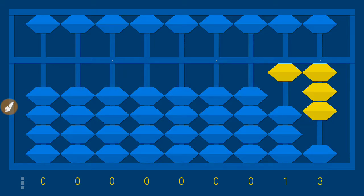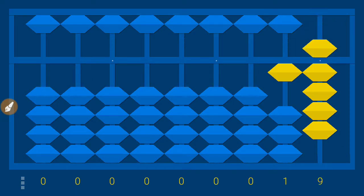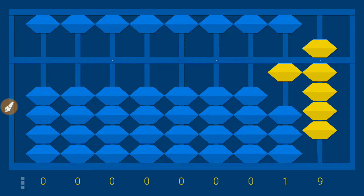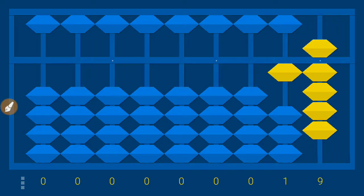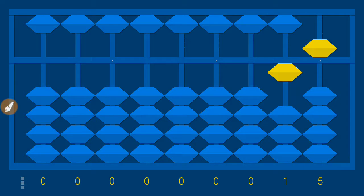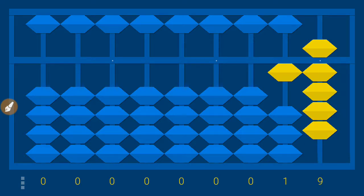Continuing — twelve, thirteen, fourteen. Now for fifteen: if you just push all lower beads up it becomes nineteen, not fifteen. So instead, clear the lower beads and push the upper bead up. That gives you fifteen. Then sixteen, seventeen, eighteen, nineteen.